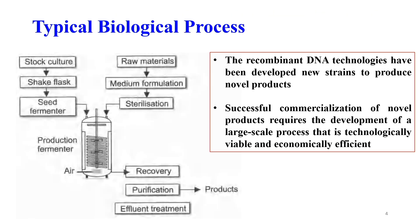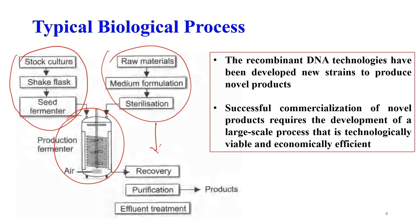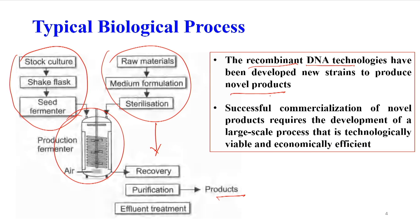In a typical bioprocess, we start with the culture, which goes to a bioreactor that requires raw material and converts it to your product. The product is then recovered and purified. With the development of recombinant DNA technology, it is now possible to produce any novel product using bioprocessing. Additionally, by application of metabolic engineering, it is possible to enhance the flux, improve the yield, and produce novel products.